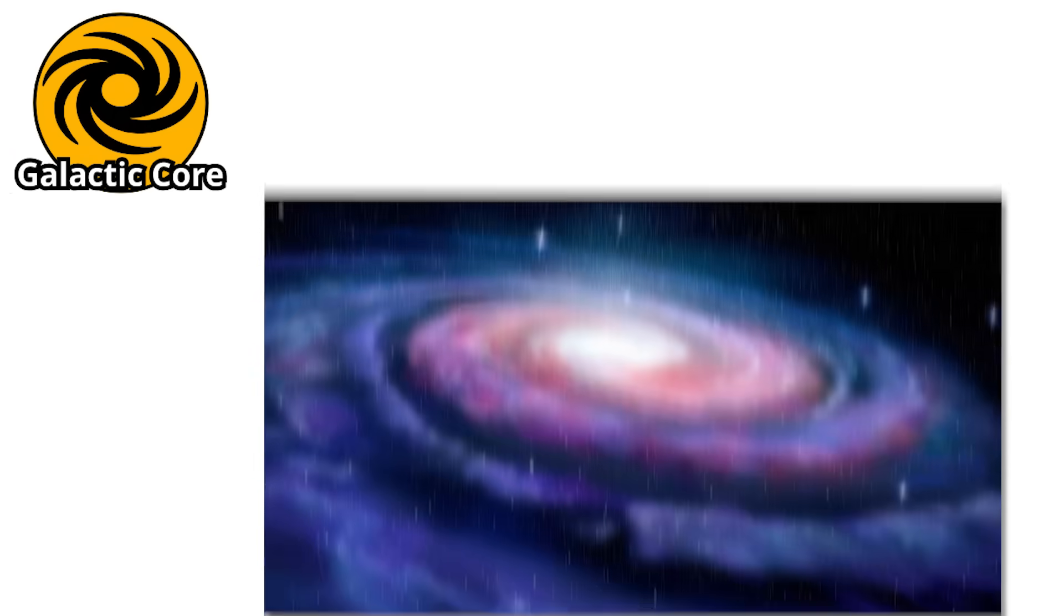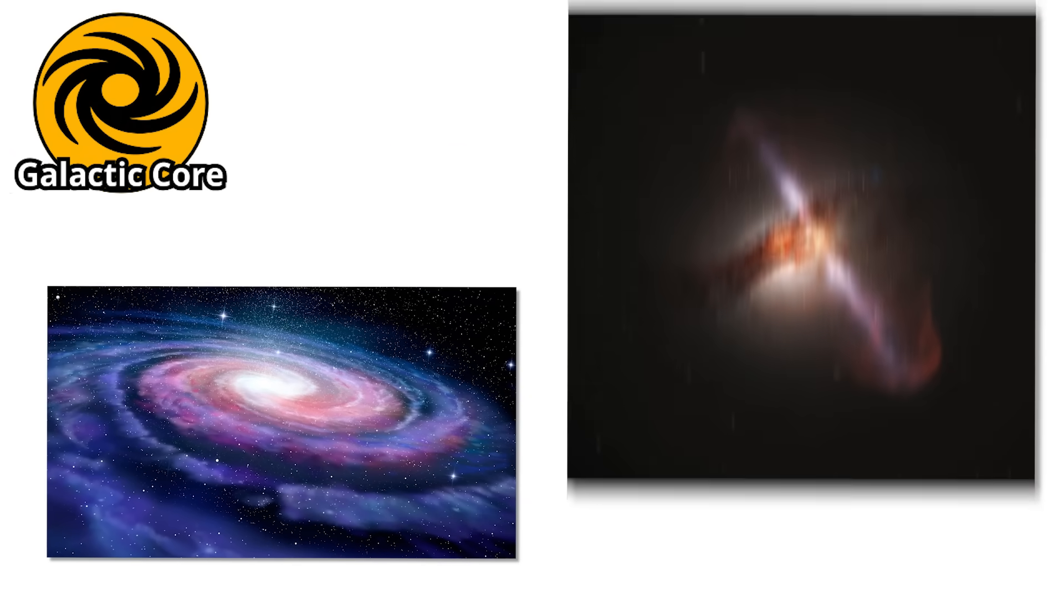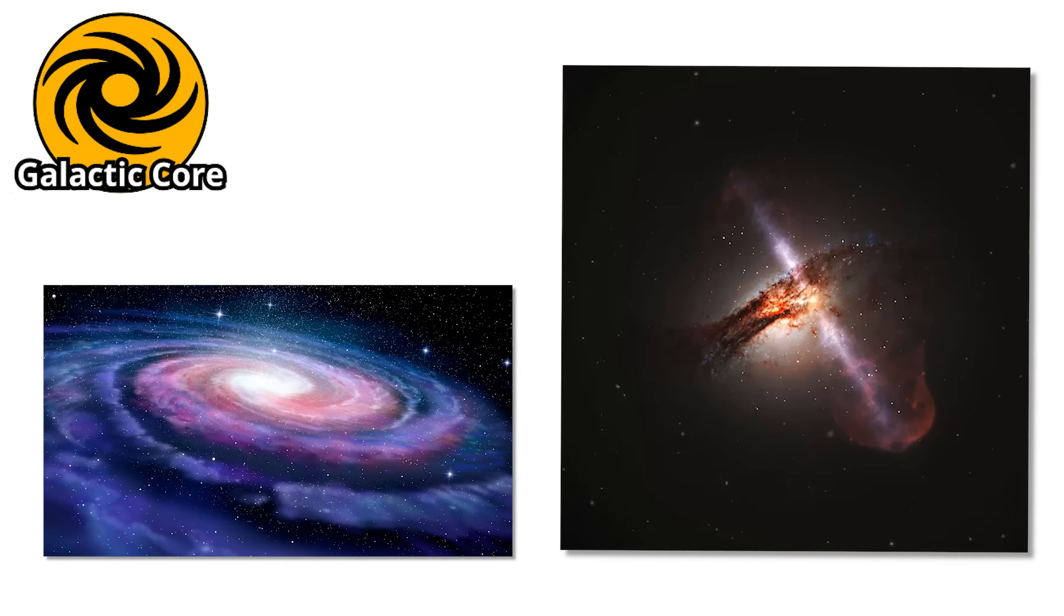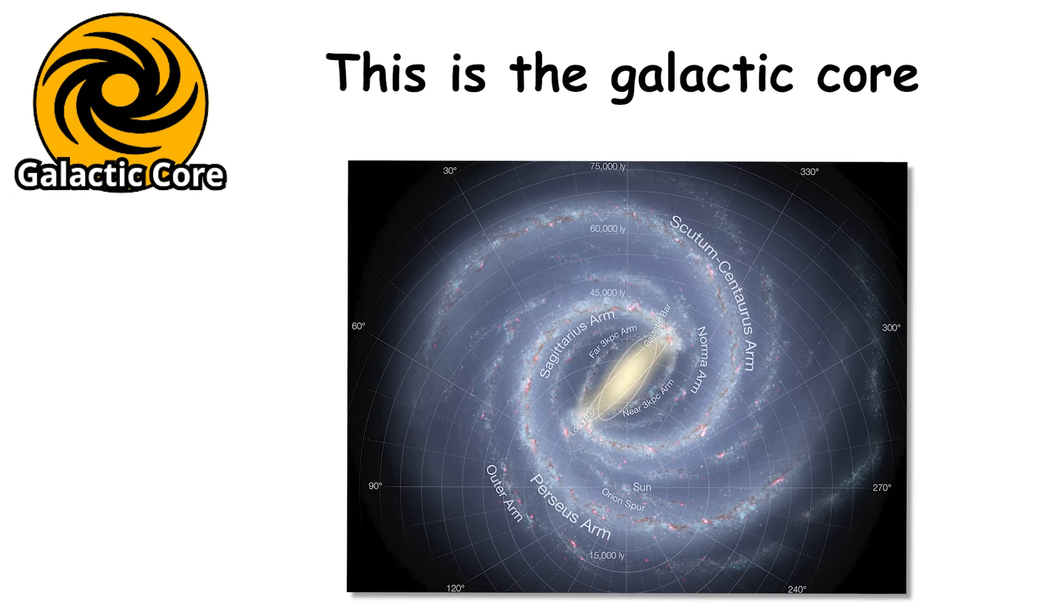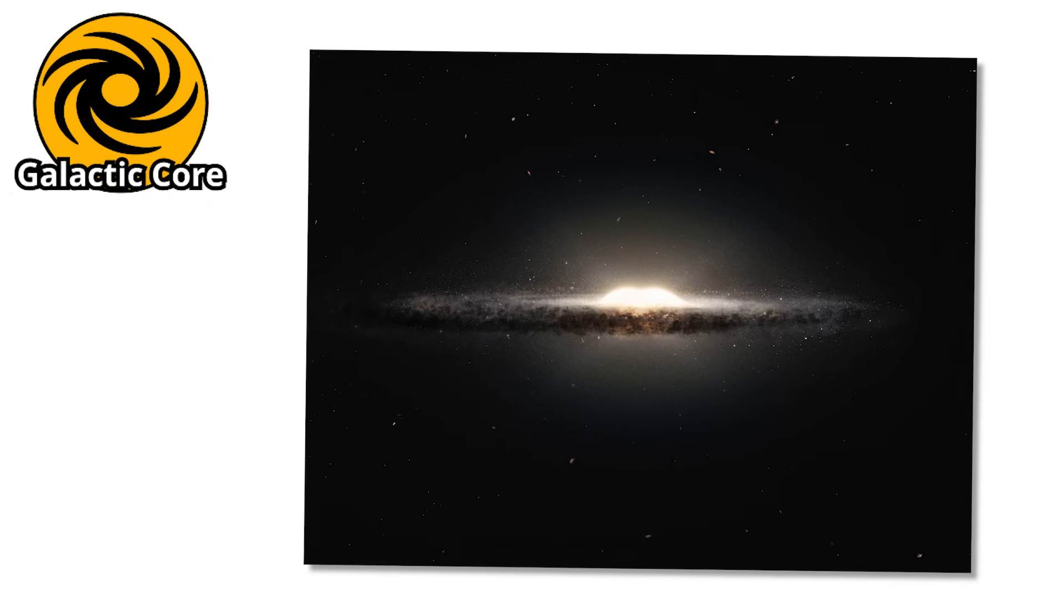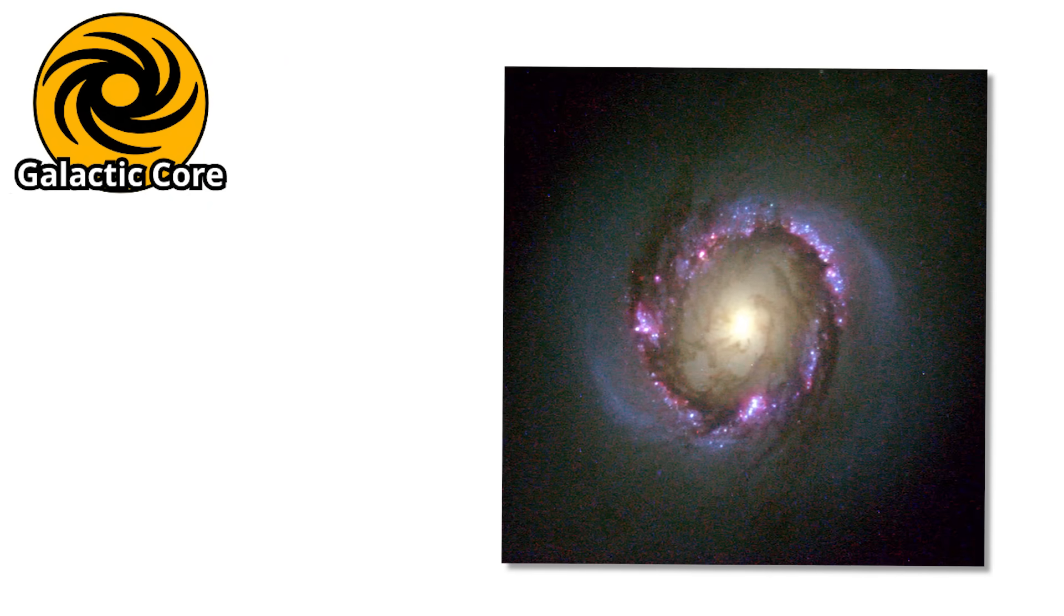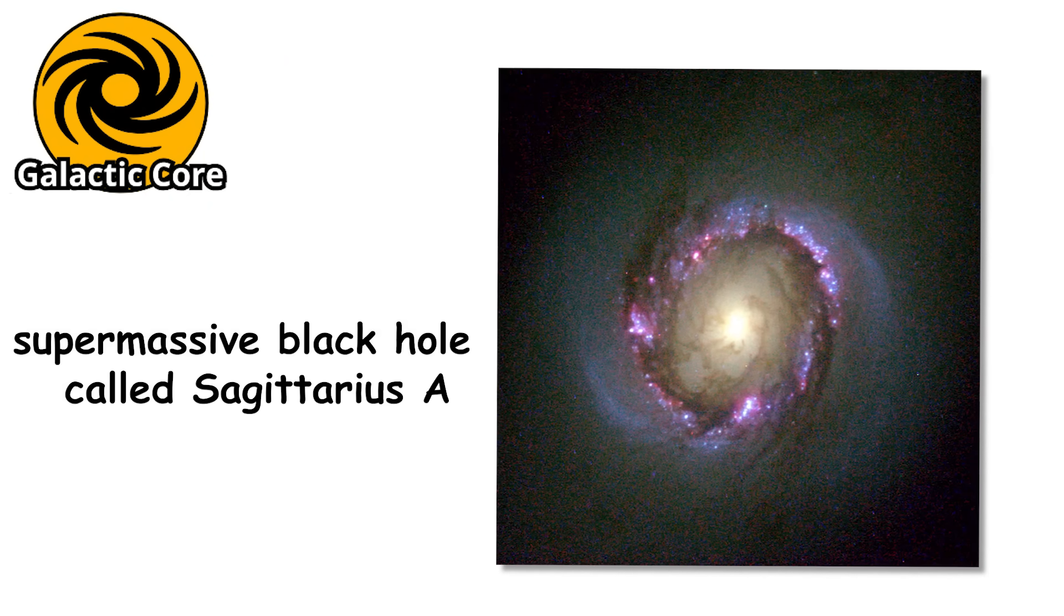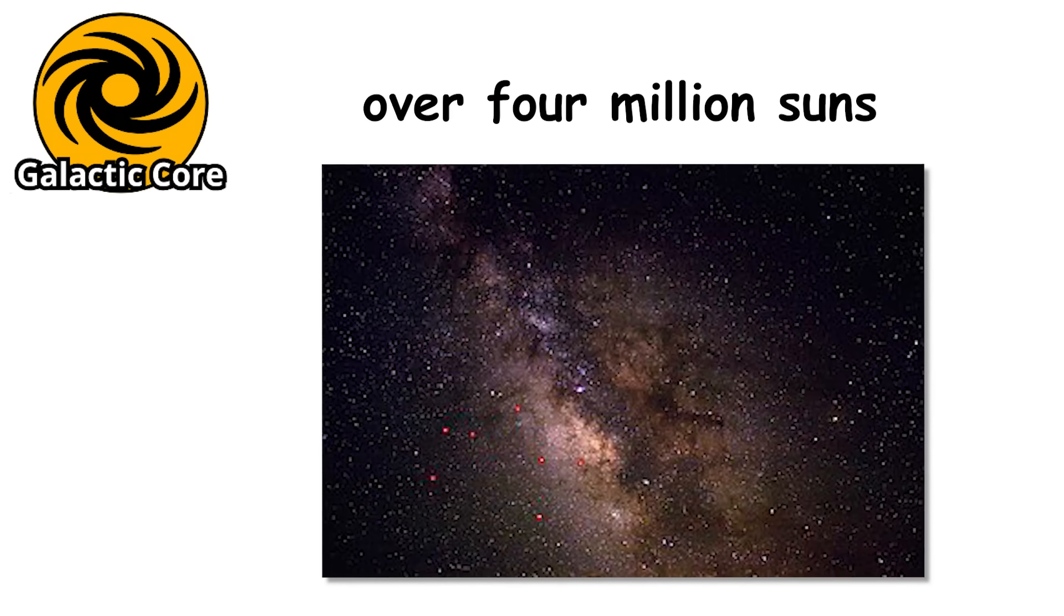Number 5. At the heart of our Milky Way galaxy lies a region so chaotic and dangerous that it makes even black holes and quasars seem almost predictable. This is the galactic core, a place where stars race through space at blistering speeds, radiation floods every corner, and gravity pulls in every direction at once. Right at the center is a supermassive black hole called Sagittarius A. It has the mass of over 4 million suns, and everything in the galaxy orbits around it.